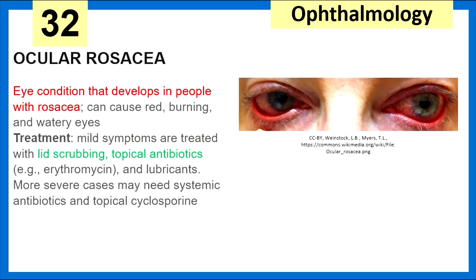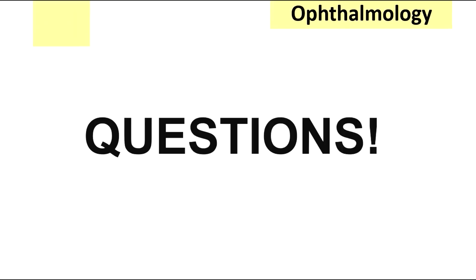Finally, ocular rosacea — a condition that develops in people with rosacea — can cause red, burning, and watery eyes. We treat with lid scrubbing and topical antibiotics such as erythromycin and lubricants. More severe cases may need systemic antibiotics and topical cyclosporine.